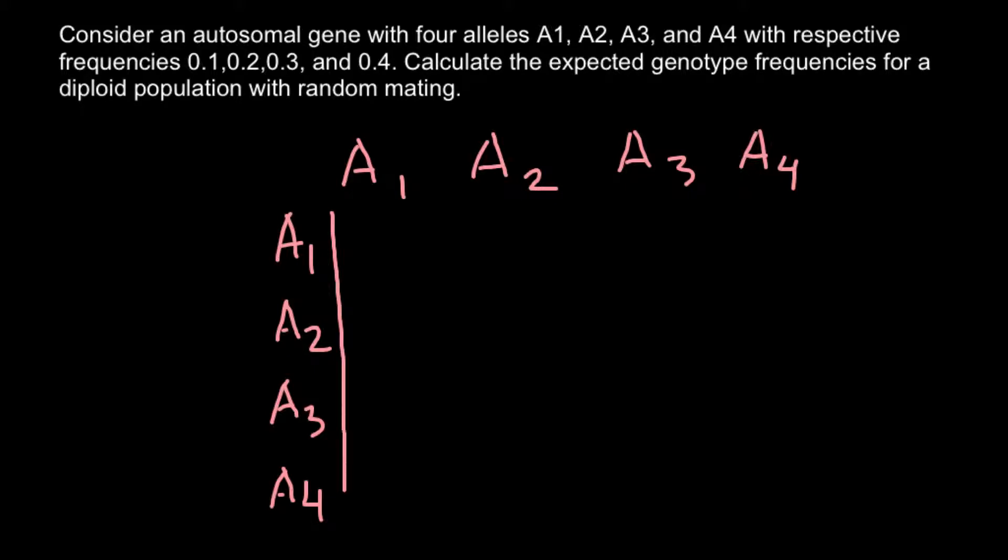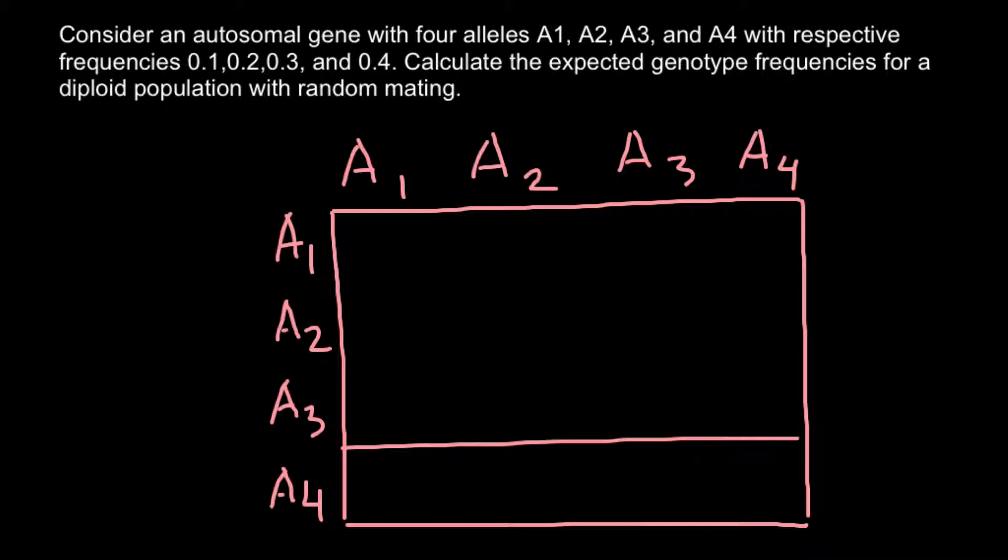Now we build a Punnett square, and this is going to be a square with four rows and four columns. That would give us a total of 16 cells.